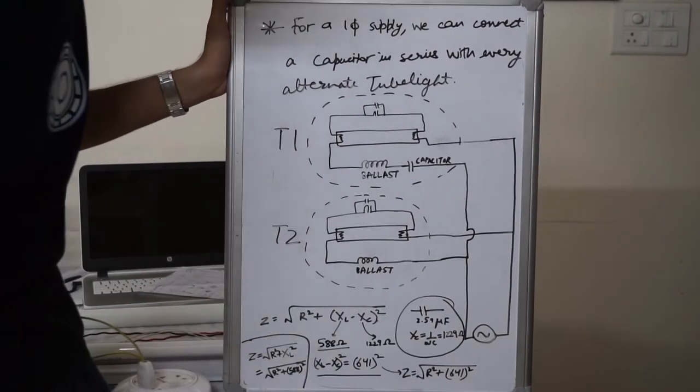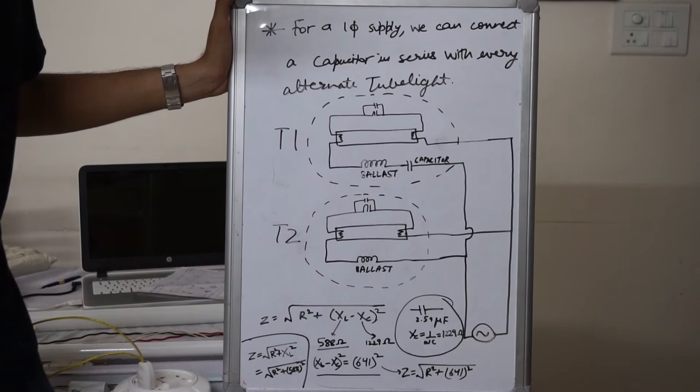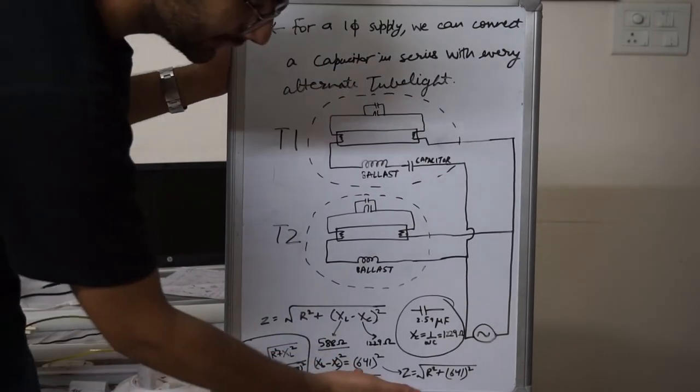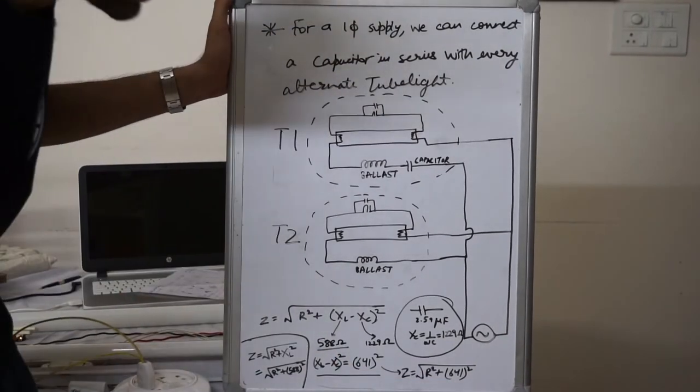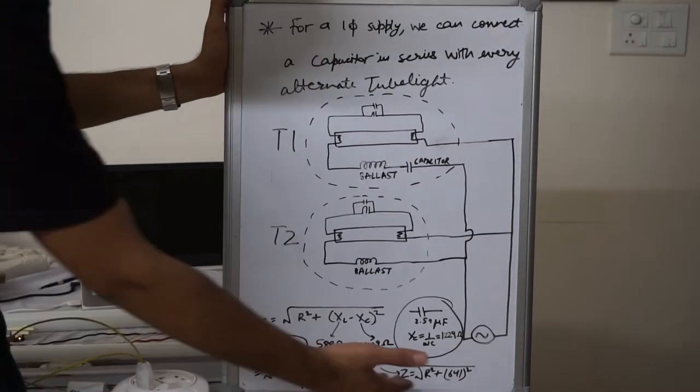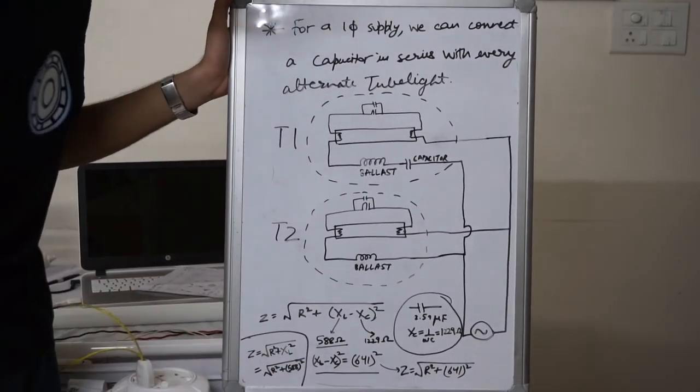In my case, I had a 2.59 microfarad capacitor available, and so you can see that the value of the impedance after adding the capacitance is more or less the same as before.